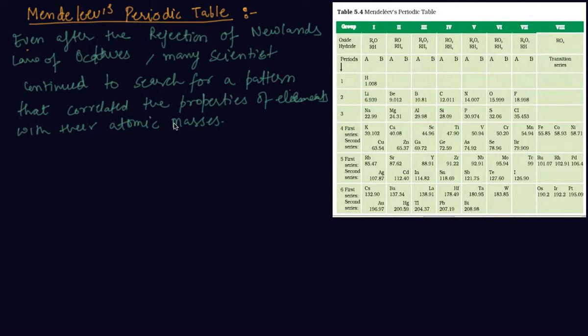The main credit for classifying elements goes to Dimitri Mendeleev. The name of the scientist is Dimitri Ivanovic Mendeleev. He was a Russian scientist, the most important contributor to the early development of a periodic table of elements, wherein the elements were arranged based on their fundamental property, the atomic mass, and also on the similarity of their chemical and physical properties.